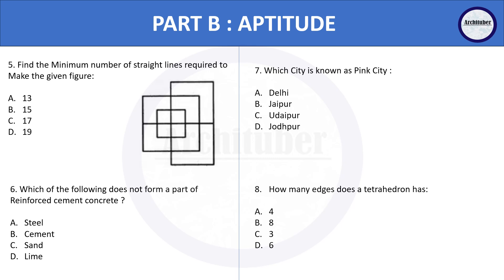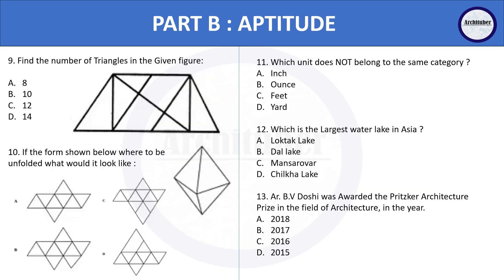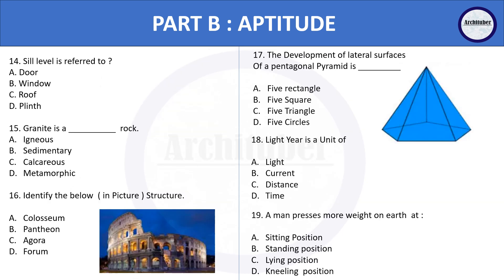There are general knowledge questions to practice so that you become familiar with such types of questions. You also have one trapezoid and have to count the number of triangles. In question number 10, you are given an octahedron and have to find out how it will look when unfolded. Questions 11 and 12 are general knowledge questions. Then there is an image identification question — question 17 asks about the development of lateral surfaces of a pentagonal pyramid.